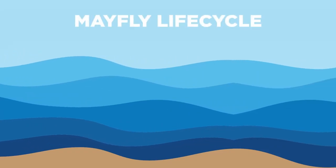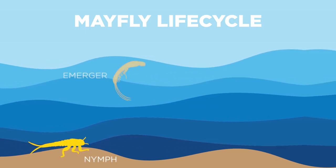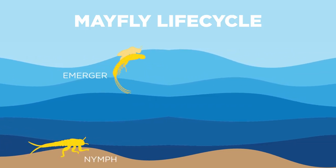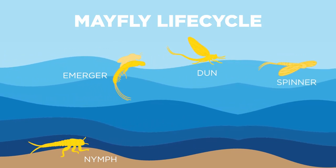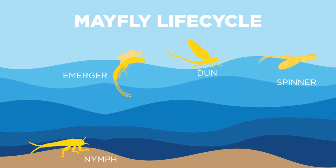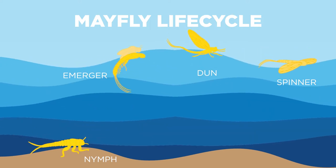Before we get started tonight, just to explain a little bit about the life cycle of mayfly. Mayfly has four distinct life stages: the nymph, the emerger or the cripple, the adult or the dun, and the spent adult or the spinner. So we're going to be tying patterns that represent each of these stages in the life cycle. In this video, we're going to be tying the mayfly nymph.